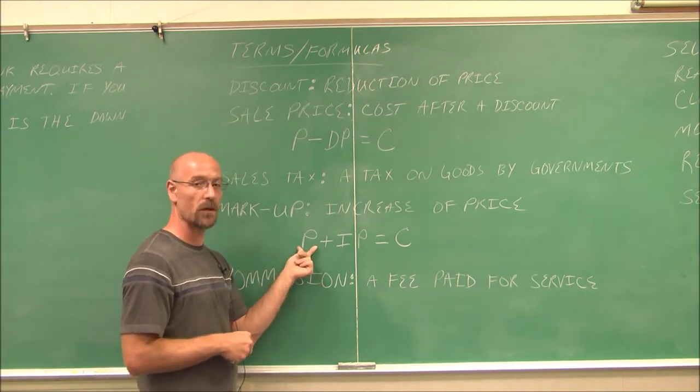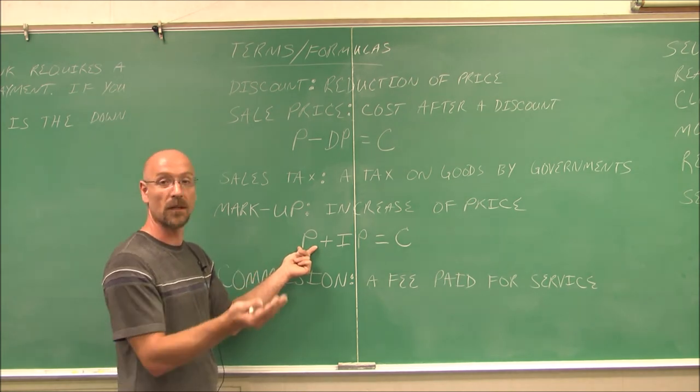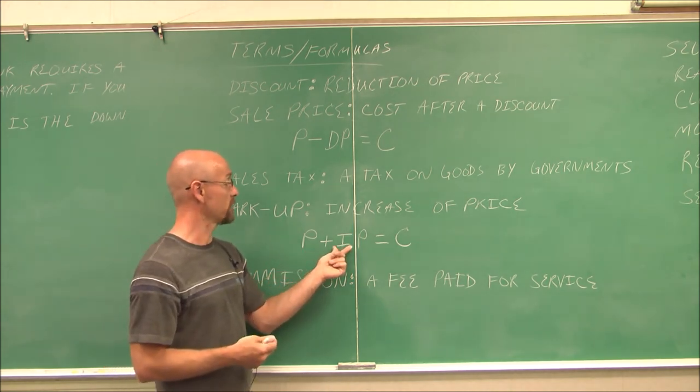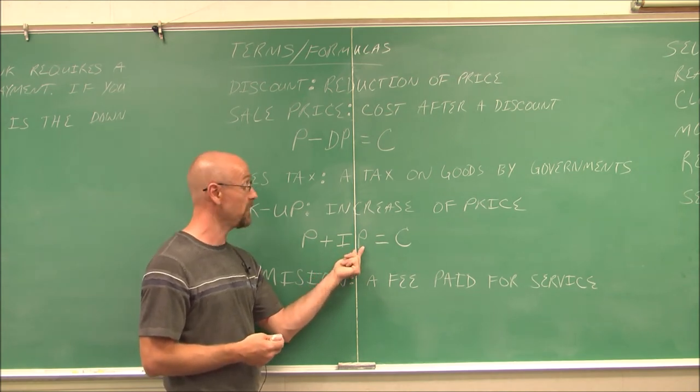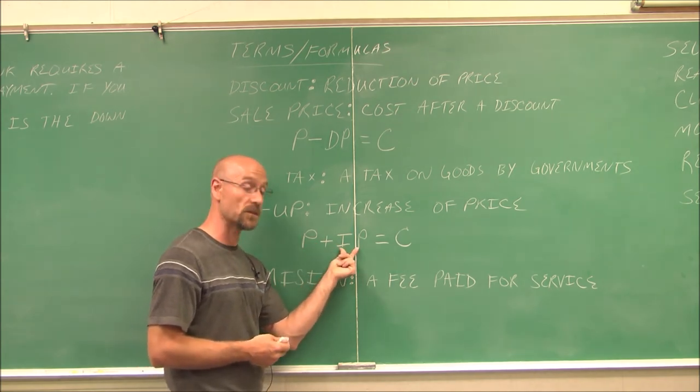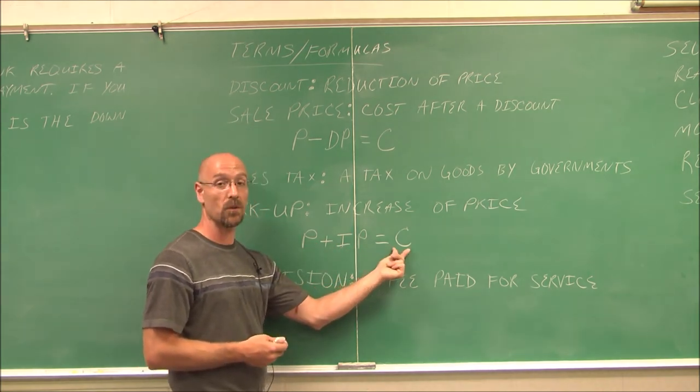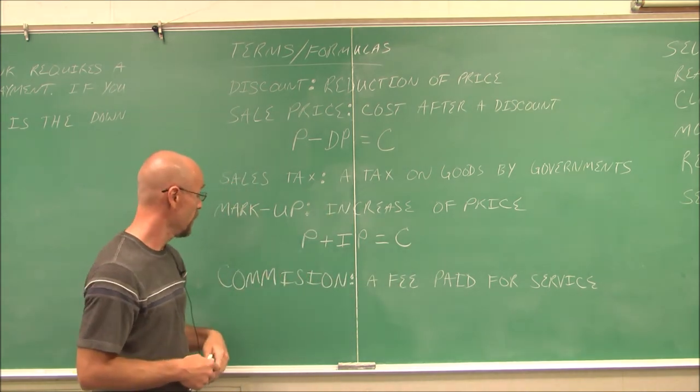An example of that, you go to the grocery store and you have to pay something that costs $100. If you have 6% sales tax, 6% of $100 would be $6. My cost is going to be $100, the price, plus the increase of $6, to get a total of $106 after paying that tax.